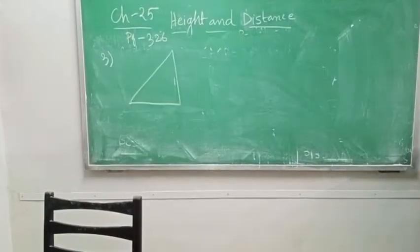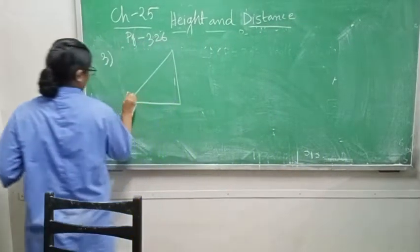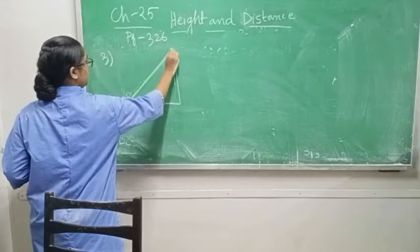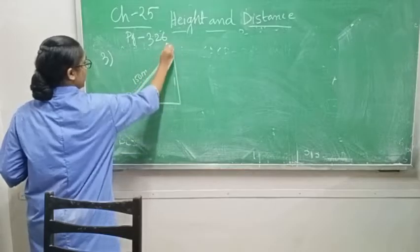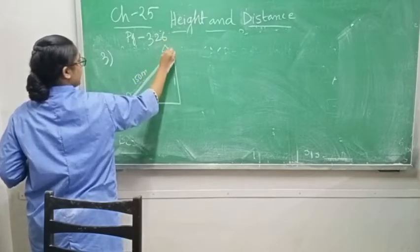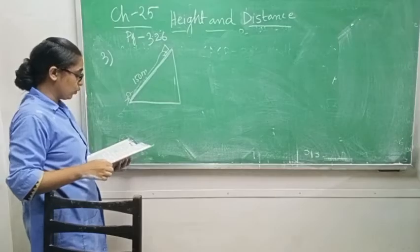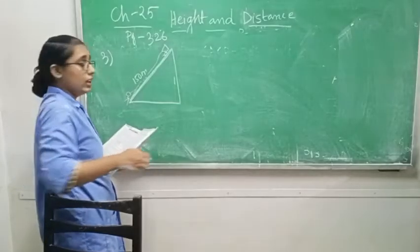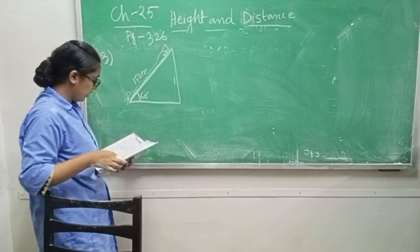AB equals 9 by root 3, but it is in fractional form. Whenever a root term appears in the denominator, rationalize it. Multiply numerator and denominator by root 3: 9 into root 3 gives 9 root 3, and root 3 into root 3 gives 3. So AB equals 9 root 3 by 3 equals 3 root 3. Height of the tower equals 3 root 3 meters. Please write the answer as a statement.